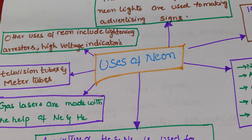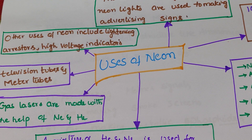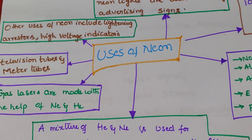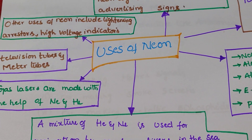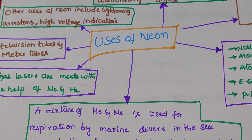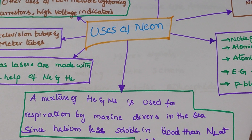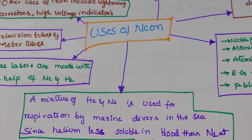Gas lasers are made with the help of neon and helium. Also, a mixture of helium and neon is used for respiration by marine divers in the sea, since helium is less soluble in blood than nitrogen at high pressure.